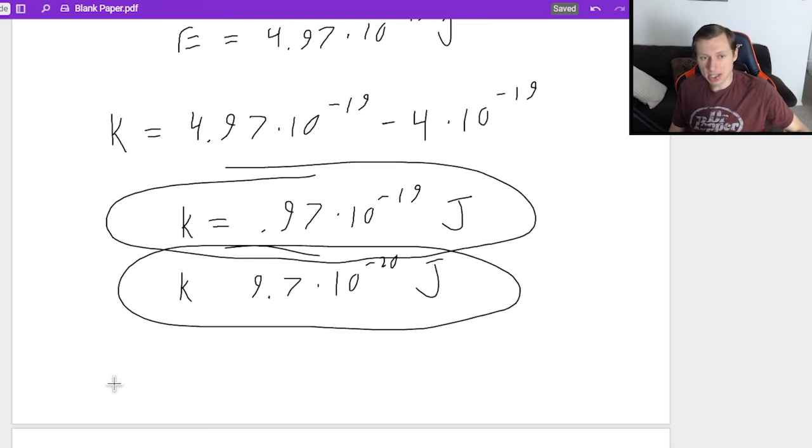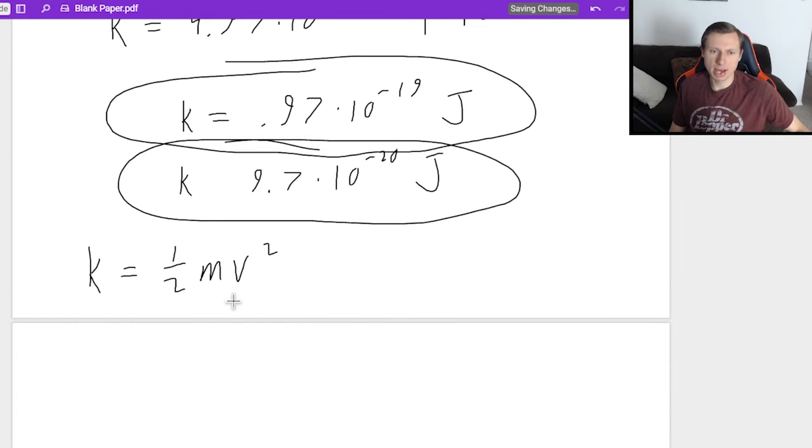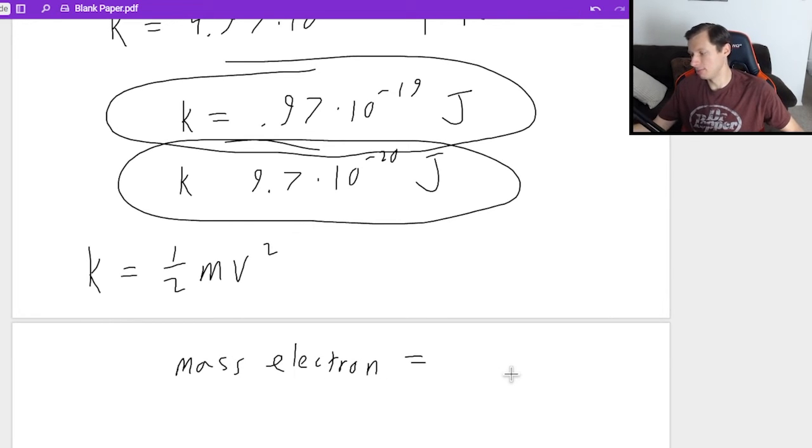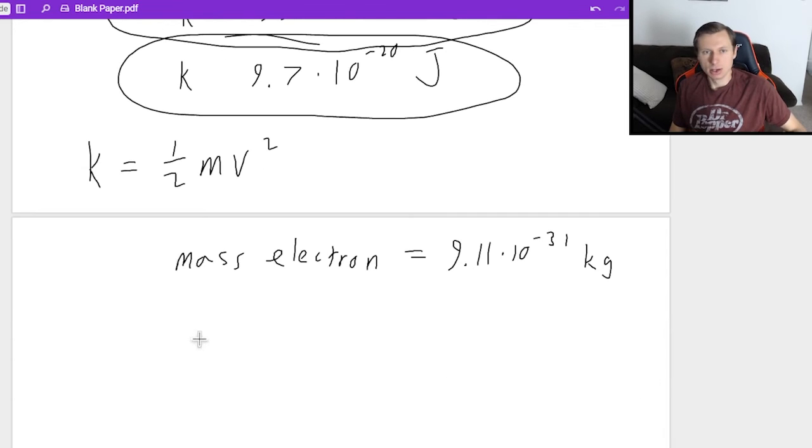And now if I want to find the velocity, well remember, kinetic energy just equals 1 half mv squared, which then begs the question, what's the mass? Well, it's the mass of an electron, which we all know after looking at a table or an equation sheet, is 9.11 times 10 to the minus 31 kg. So then I'll just plug that in. Kinetic energy 9.7 times 10 to the minus 20 equals 1 half times mass, 9.11 times 10 to the minus 31, times v squared.